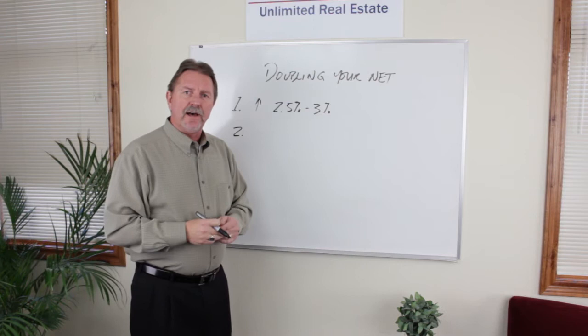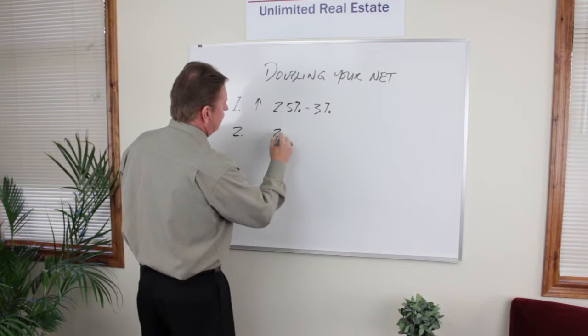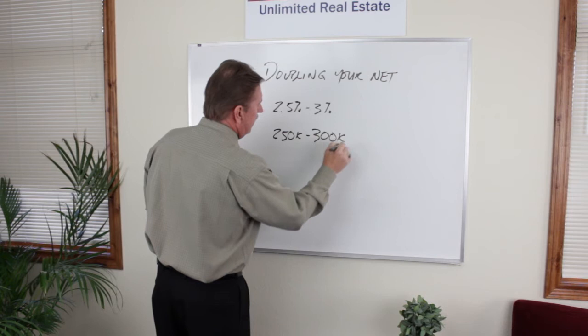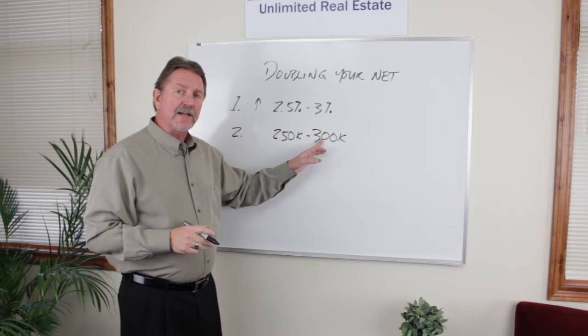Number two, in my market, the average sales price is about $250,000. That's not too far off the national numbers. So I want you to think in terms of taking your average sales price and increasing it about 20% to $300,000. Now, you may think that's harder to do than it actually is. It's really not that hard.